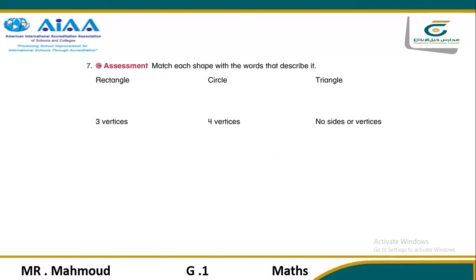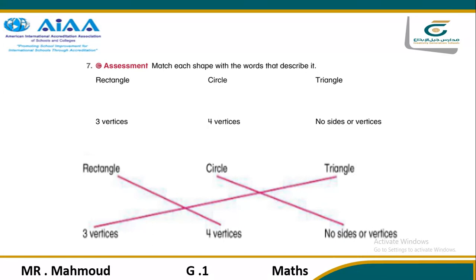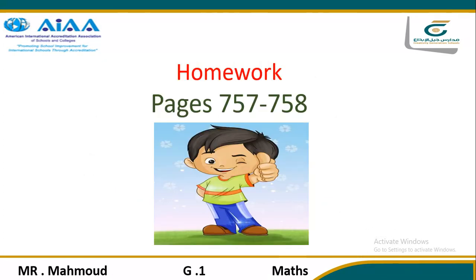Another question: match each shape with the word that describes it. A rectangle has four vertices. A circle has no sides or vertices. A triangle has three vertices. Don't forget your homework. Thanks, dear students.